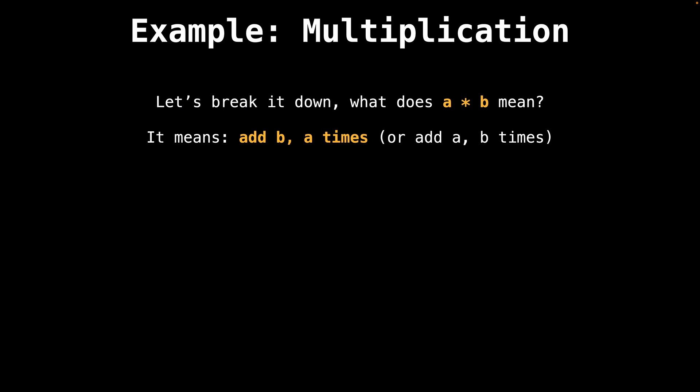Let's begin by breaking down what a multiplied by b means. It means add b, a times, or reciprocally, add a, b times. I'm sure everyone knows how to multiply, but let's walk through an example in detail to understand how the recursive multiplication implementation is derived.